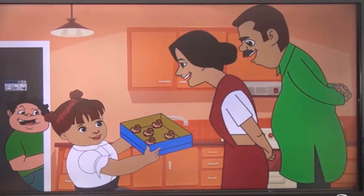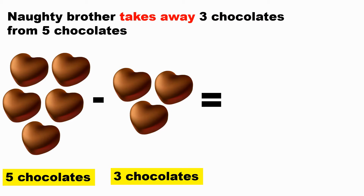Now Ria was very happy and excited and she was showing it to her parents, when her naughty brother also saw it and he took three chocolates from the box and ran away. So Ria had five chocolates and her naughty brother took away three chocolates, but Ria still has a certain number of chocolates. How many chocolates does she have now?